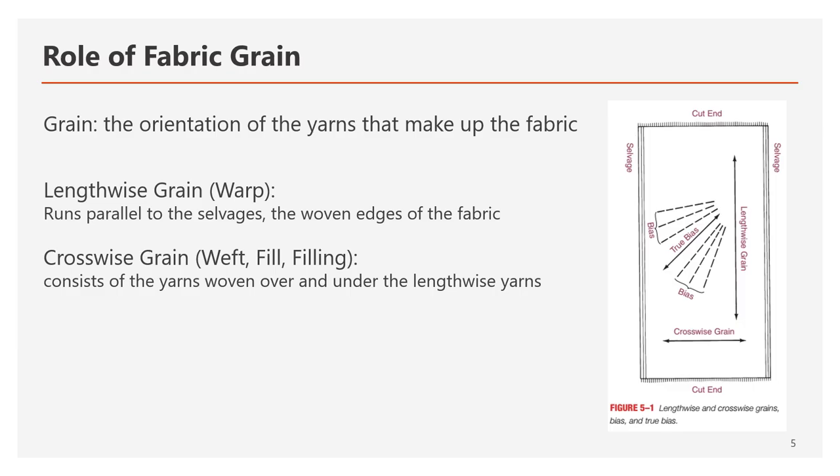To learn more about garment shape, you need to understand fabric grain first. The grain of fabric is defined as the orientation of the yarns that make up the fabric. For woven fabric, there are two sets of yarns interlaced at right angles to one another.